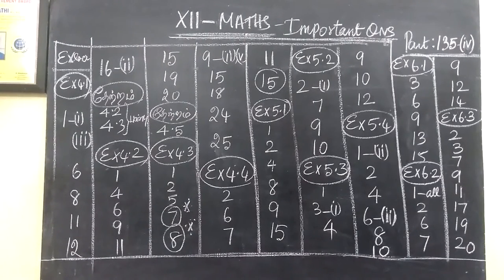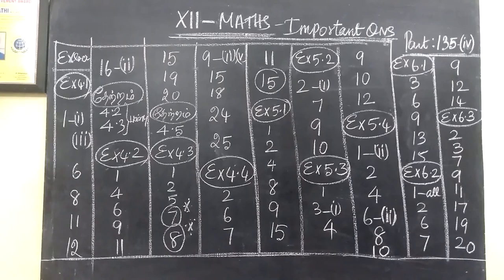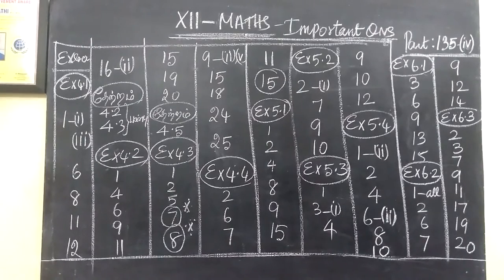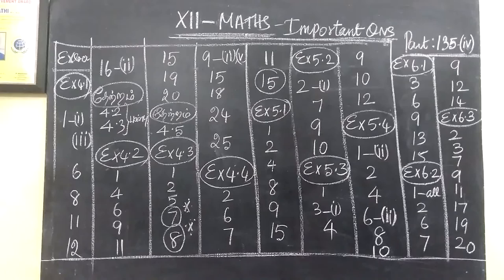Then exercise 5.1, 1, 2, 4, 8, 9, 15. Exercise 5.2, question number 2 is the subdivision 1, 7, 9, 10.